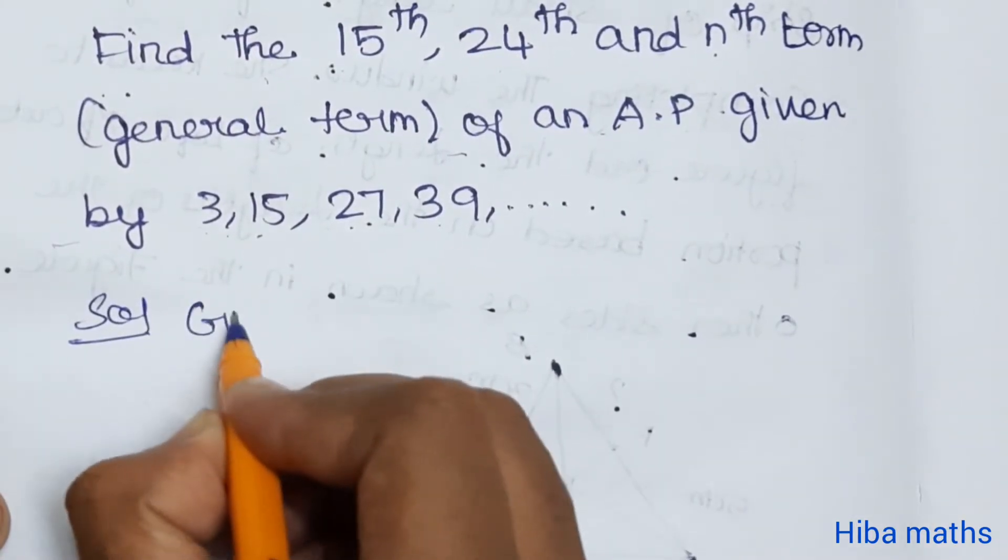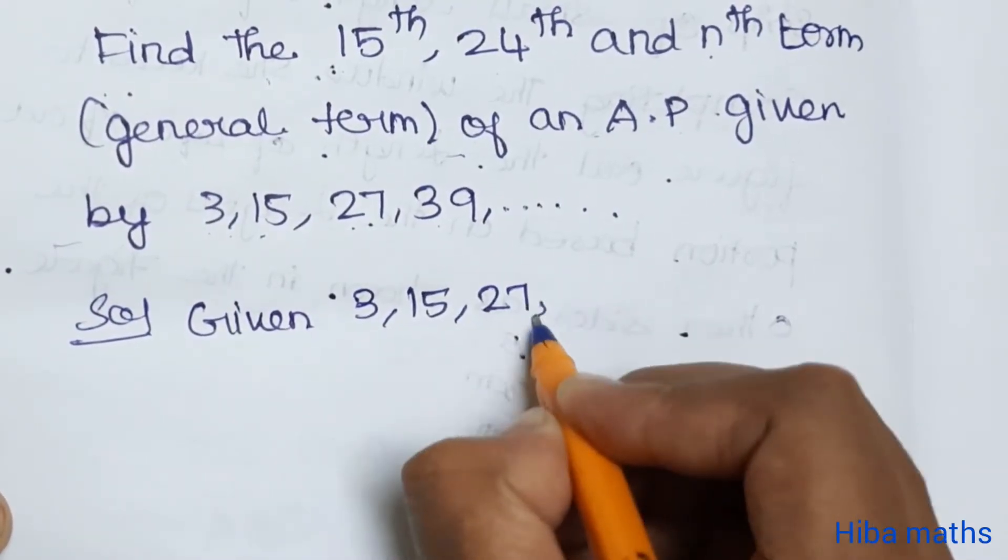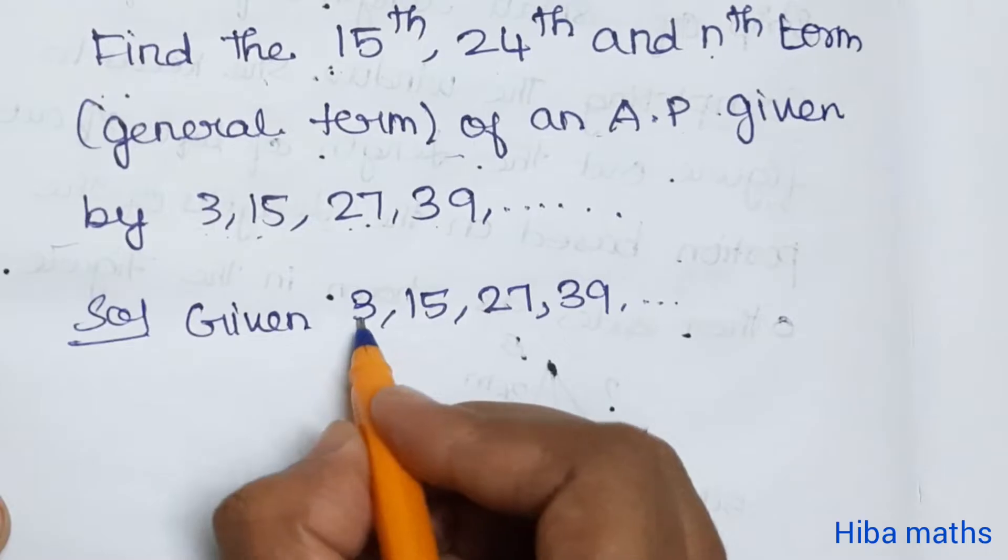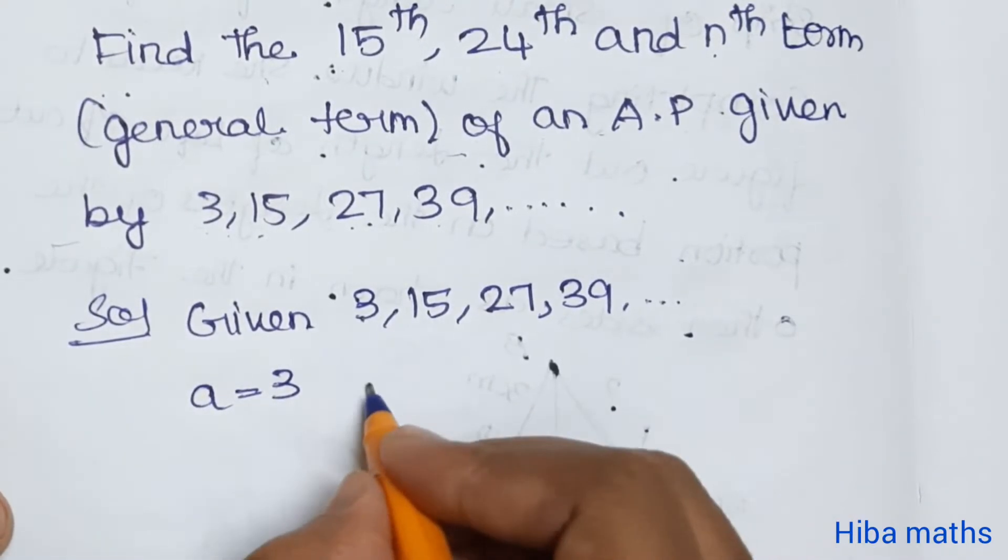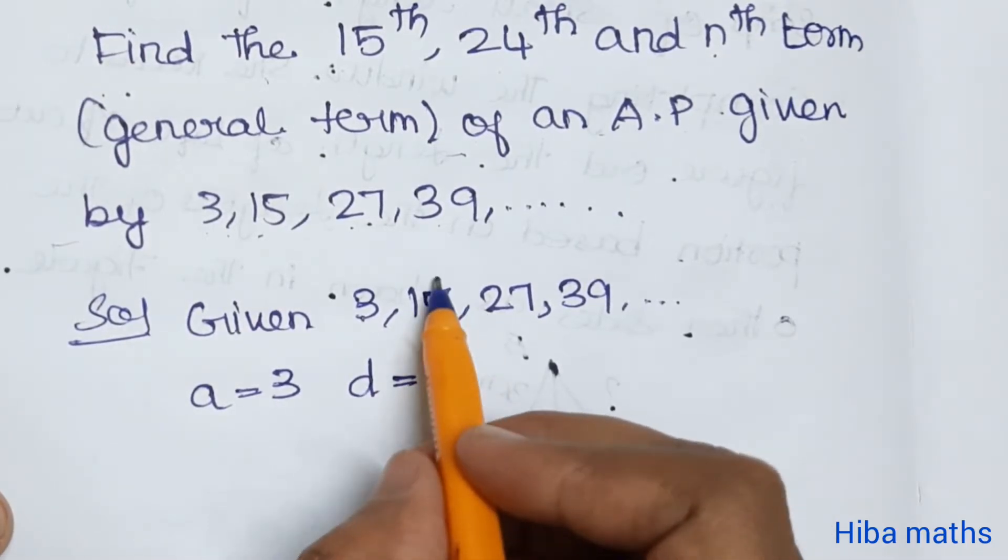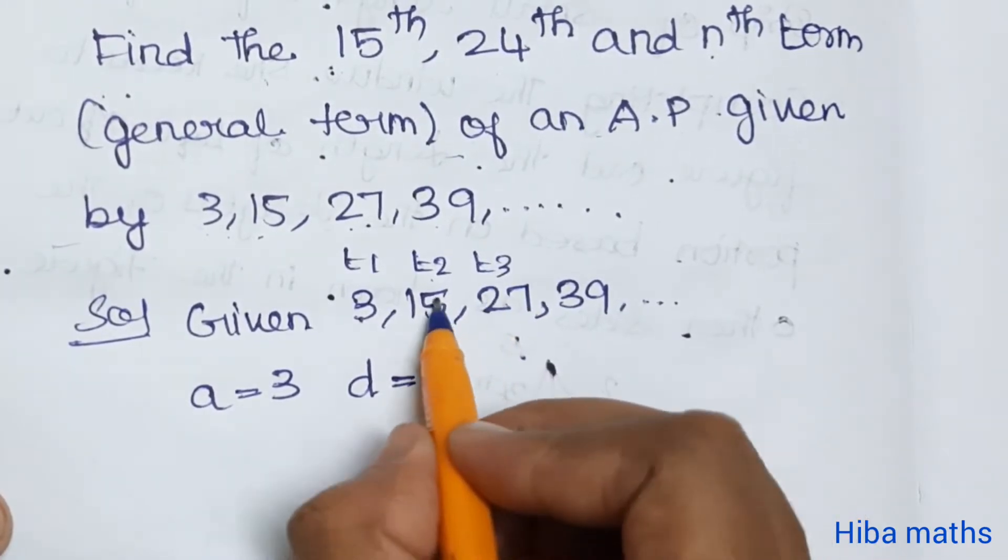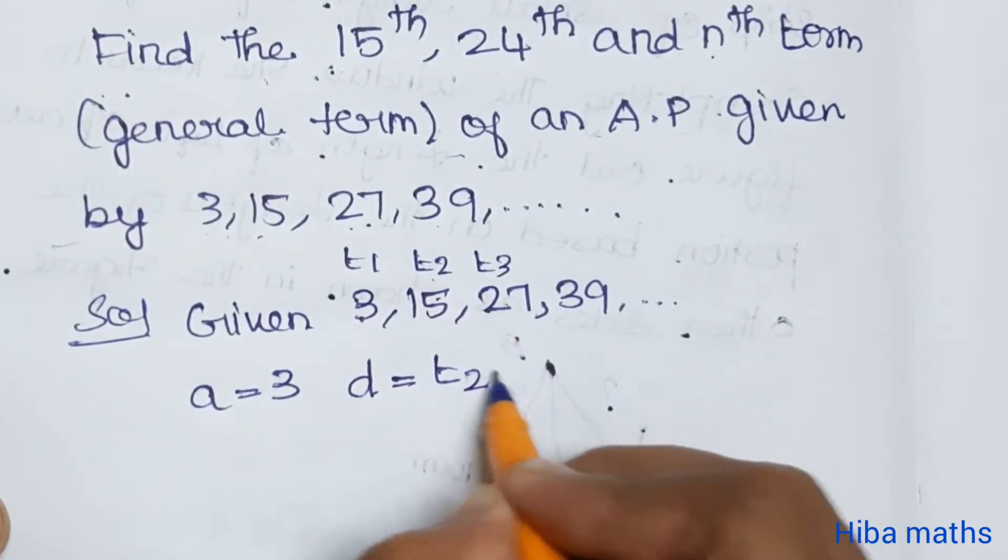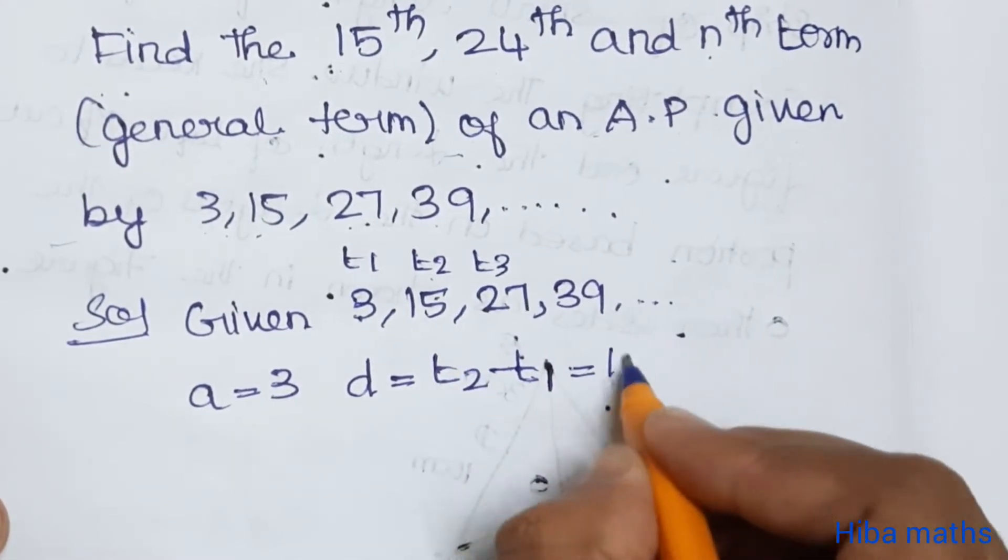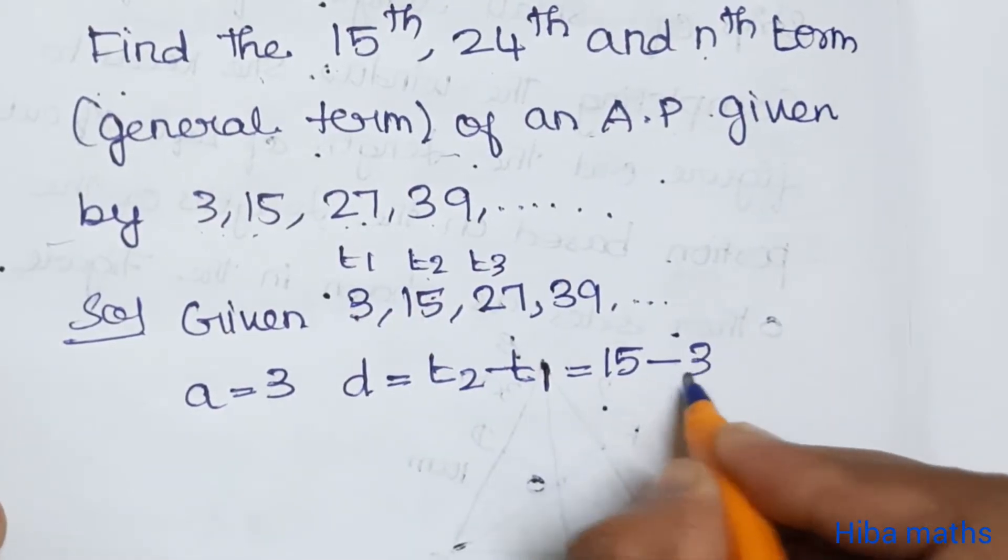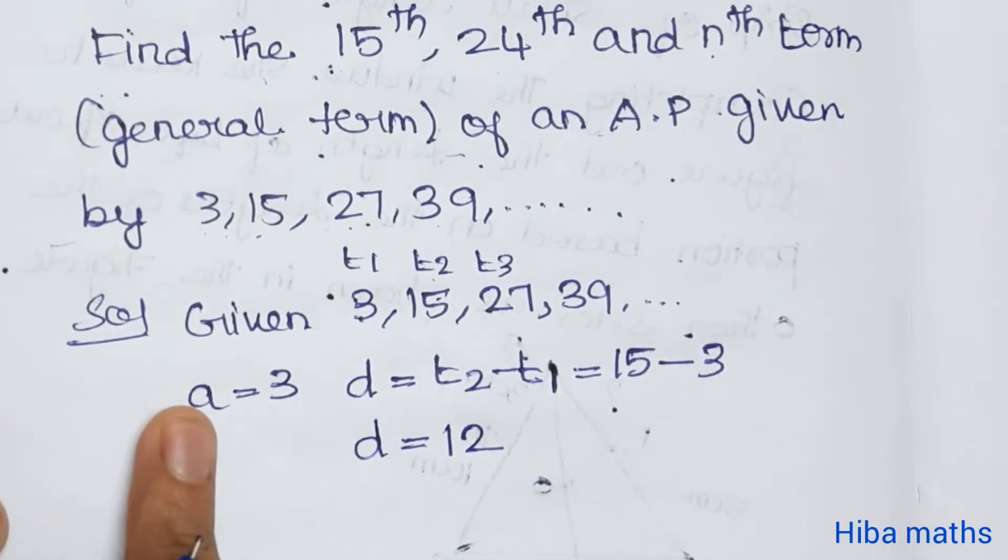Given 3, 15, 27, 39. Now the first one is a, value 3. D is the common difference. The common difference is t2 minus t1, t2 value is 15 minus t1 value is 3. So d value 15 minus 3 is 12.